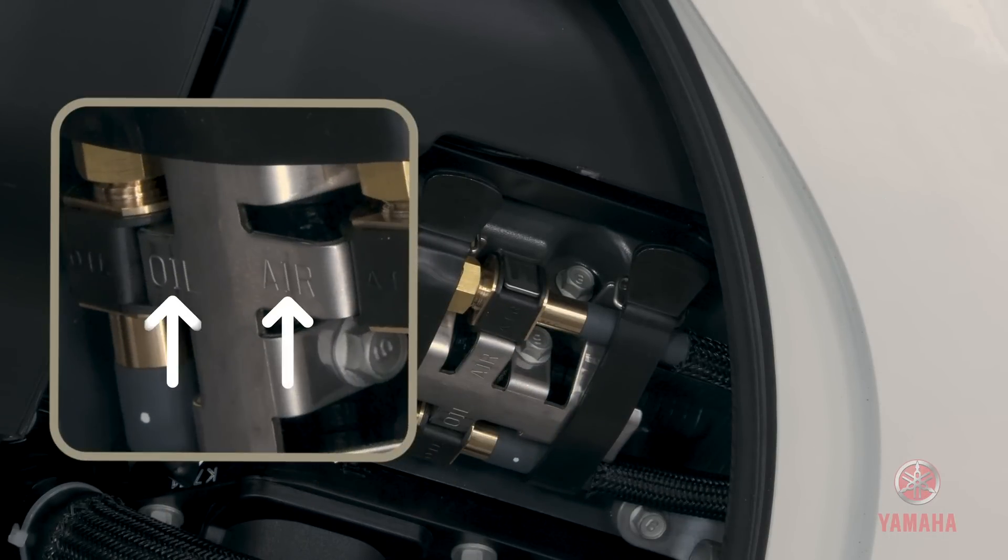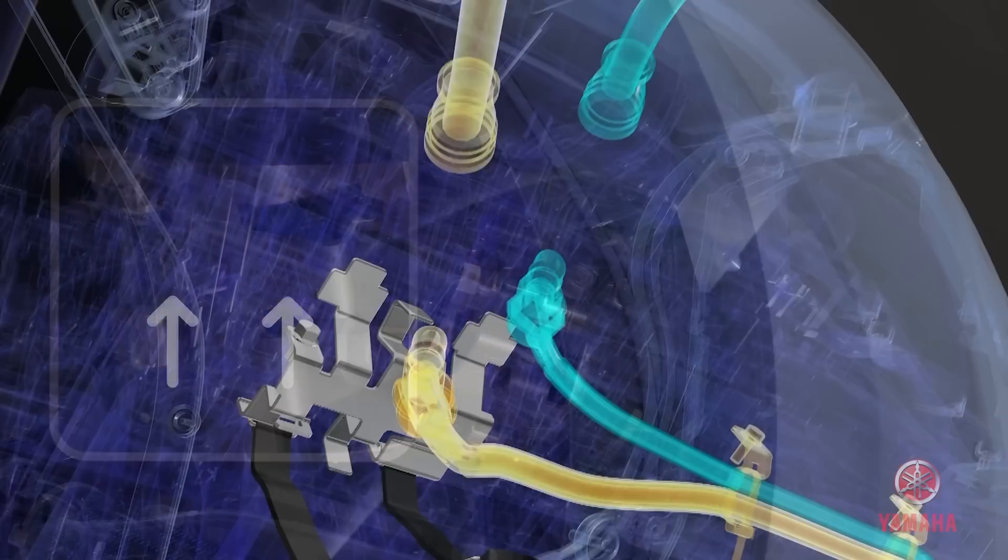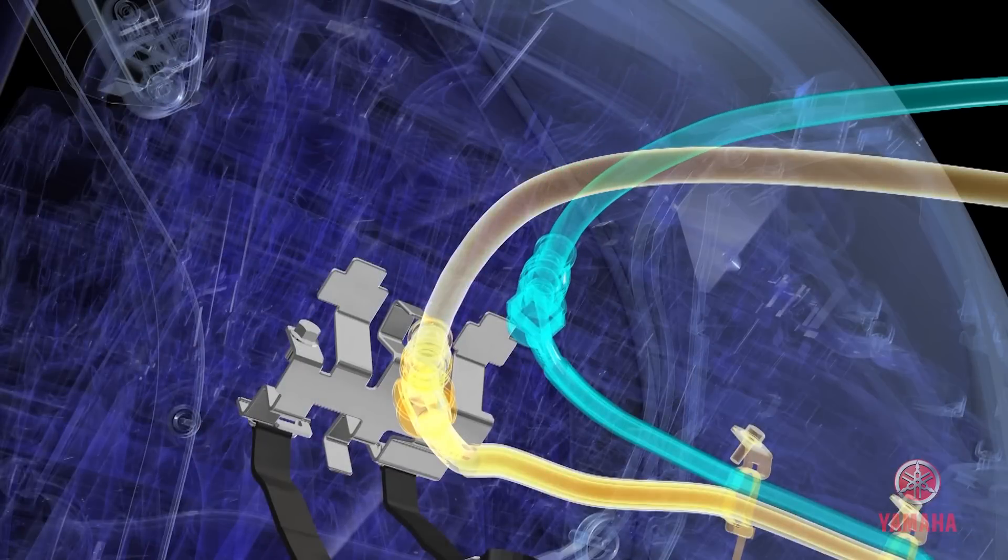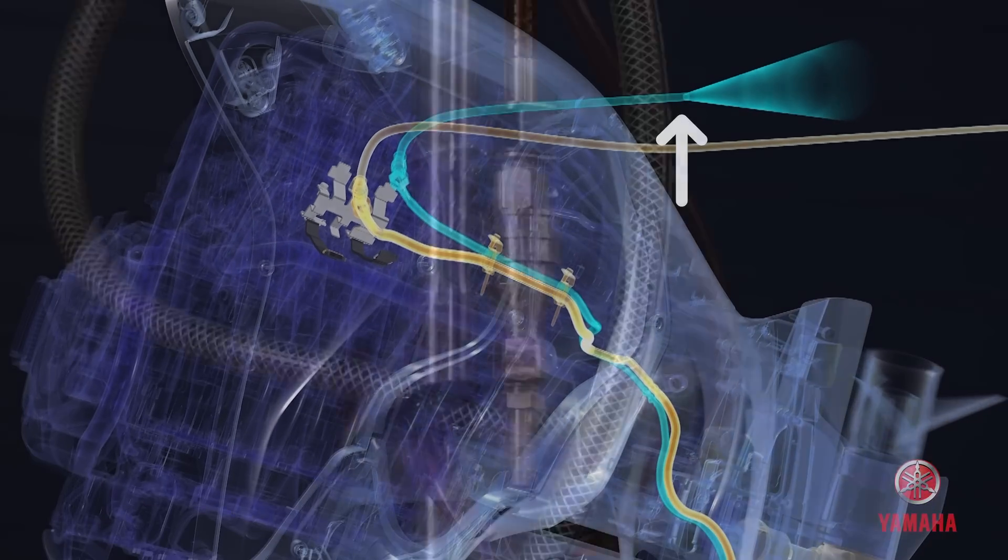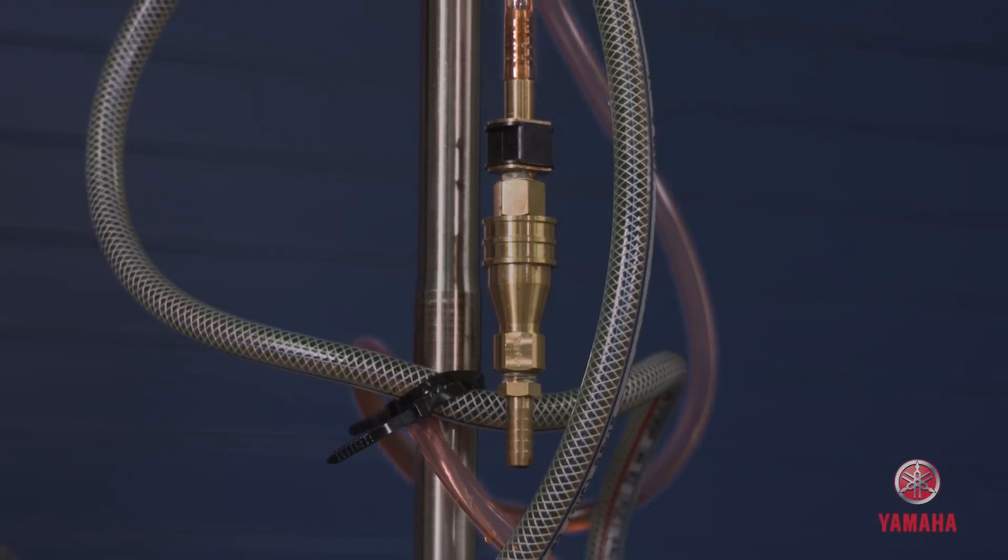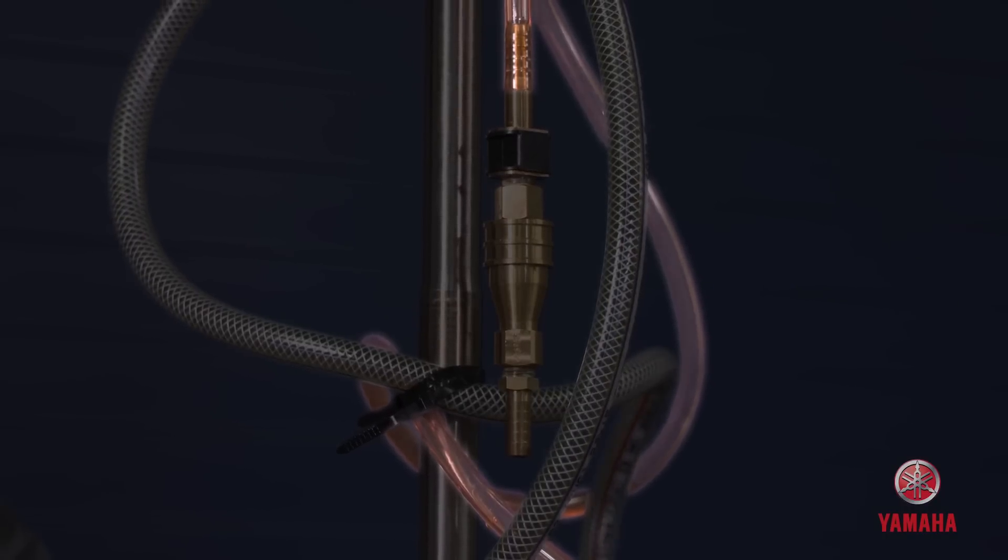They're labeled air and oil. The oil connection is used both for removing and adding oil while the air connection is for venting. In this example, the hoses can be distinguished by their gauge. The air hose is a narrower gauge than the oil hose.